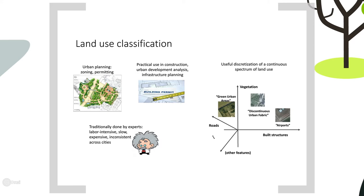We develop deep learning models to perform land use classification using high-resolution, cheaply obtainable satellite imagery at a large scale. Using our models, we are able to analyze and compare urban environments in a more continuous spectrum of visual appearance than that provided by a discrete land use class.